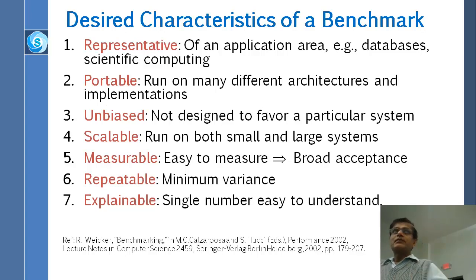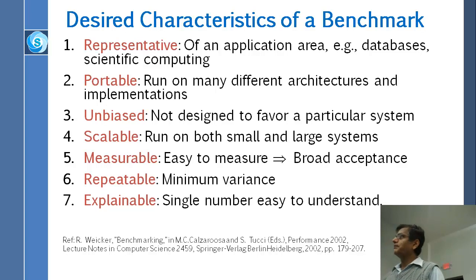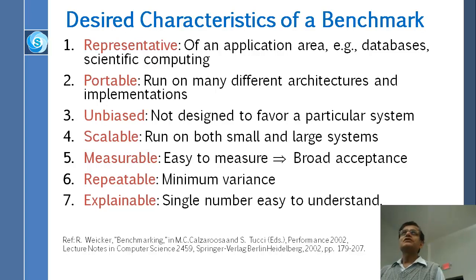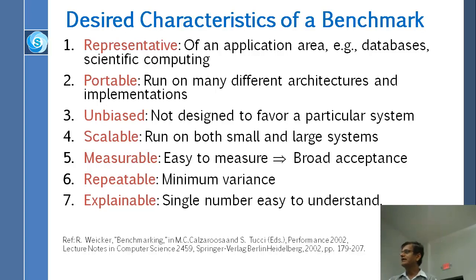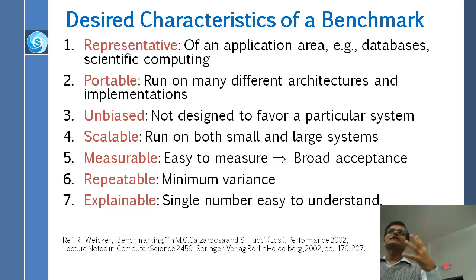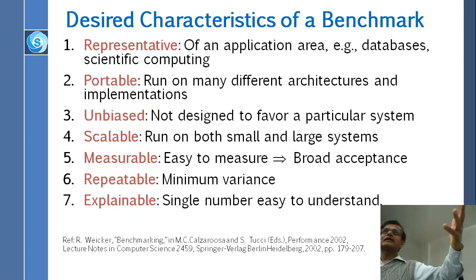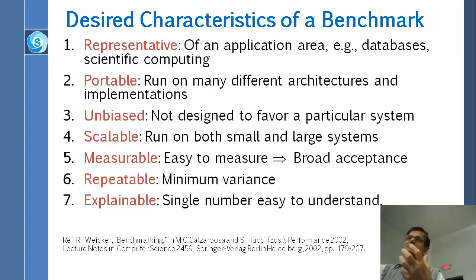Scalable means you can run it on small systems and big systems. It should be measurable — easy to measure, so many people will use it. Repeatable, so if I take a measurement and you take a measurement, they are somewhat similar. Explainable — a single number, easy to understand. The world likes single numbers: for example, 'this is a five MIP system' (million instructions per second). People love it because that's the only number they need to compare — five MIP versus six MIP — though it hides a lot of detail. Those are the seven characteristics of good benchmarks.